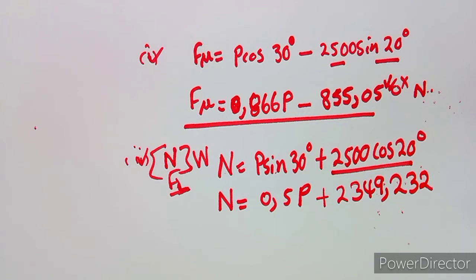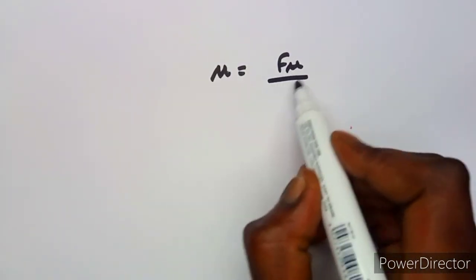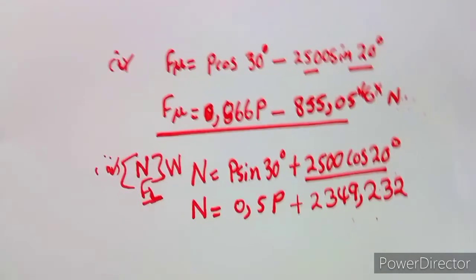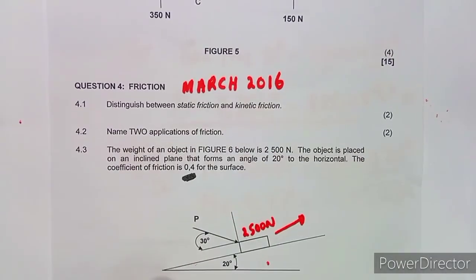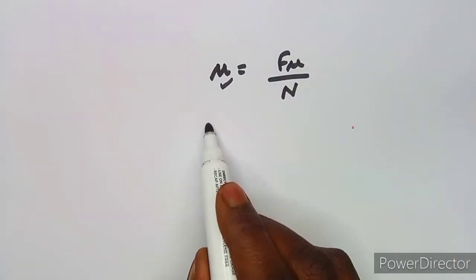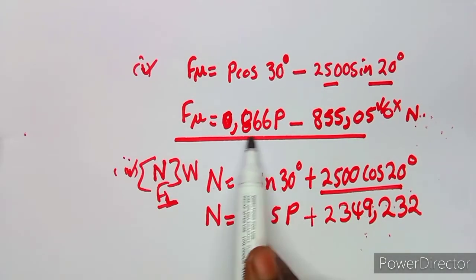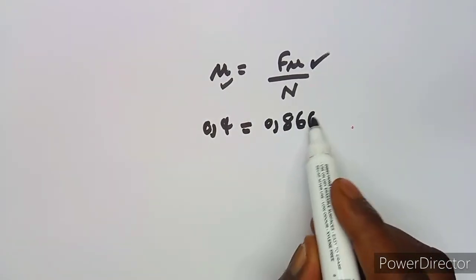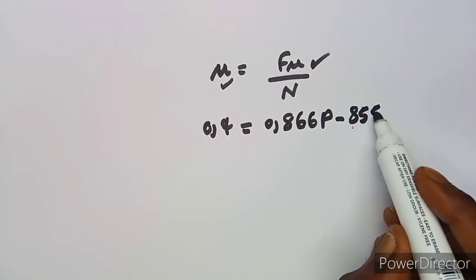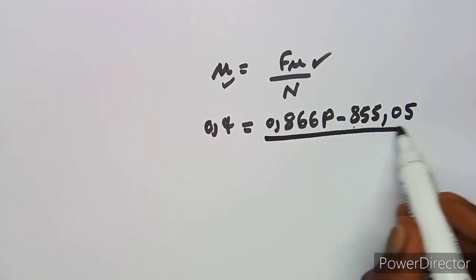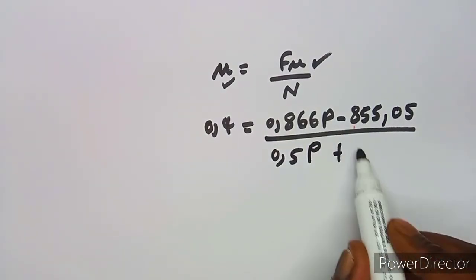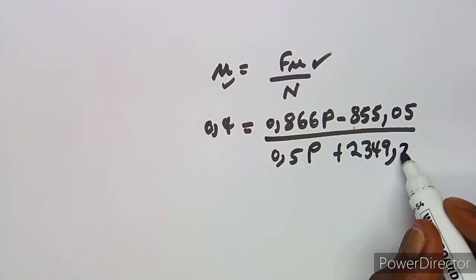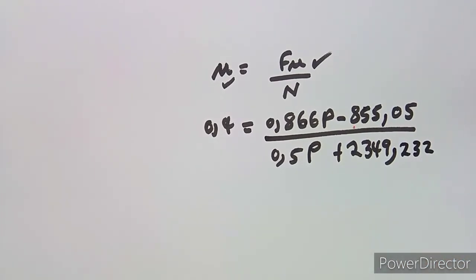We found the frictional component and the normal reaction. Now go back to the formula: coefficient of friction = frictional force / normal reaction. We are given the coefficient of friction as 0.4. So: 0.4 = (0.866P − 855.05) / (0.5P + 2349.232).